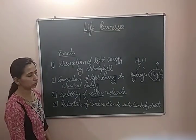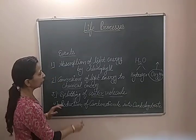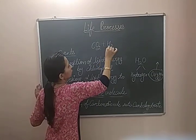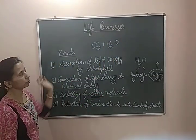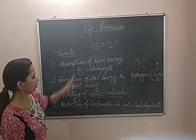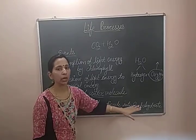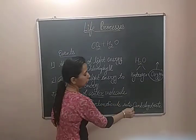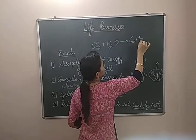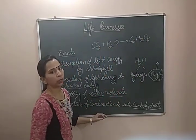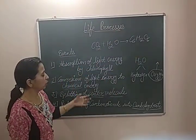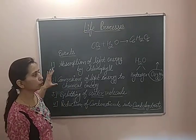The fourth step is the reduction of carbon dioxide into carbohydrates. The carbon dioxide taken in by the plants — water is split into hydrogen and oxygen — and this carbon dioxide is now reduced in the form of carbohydrate, which means glucose. Glucose is formed here from this carbon dioxide. All these events are completed during the process of photosynthesis.